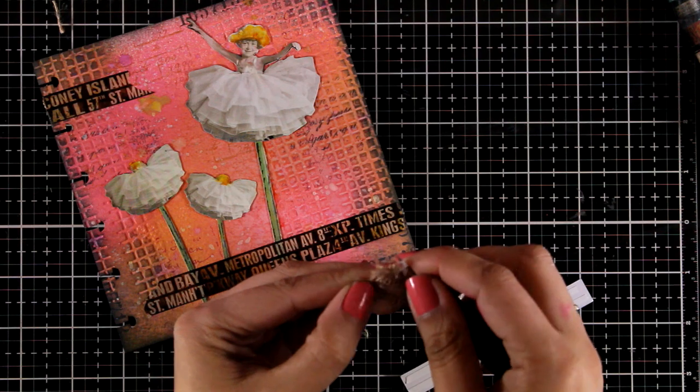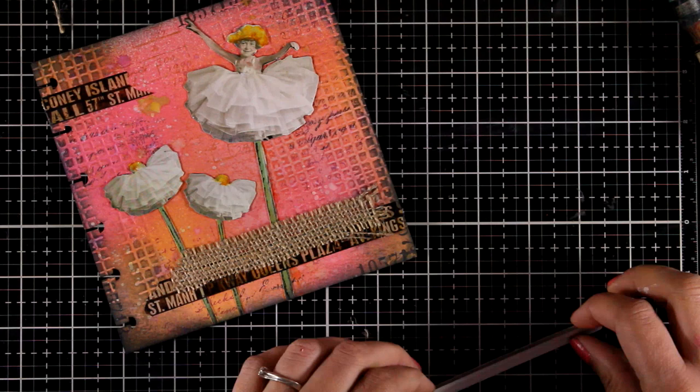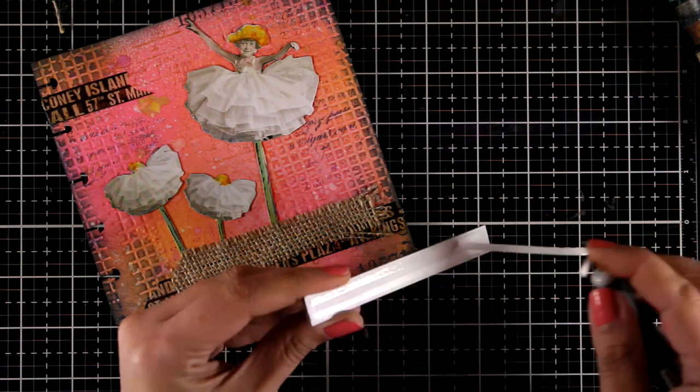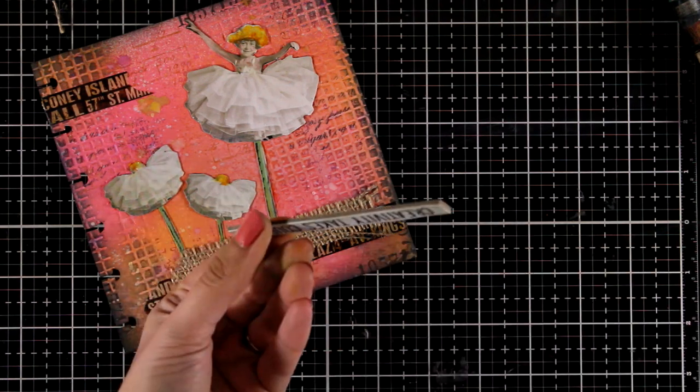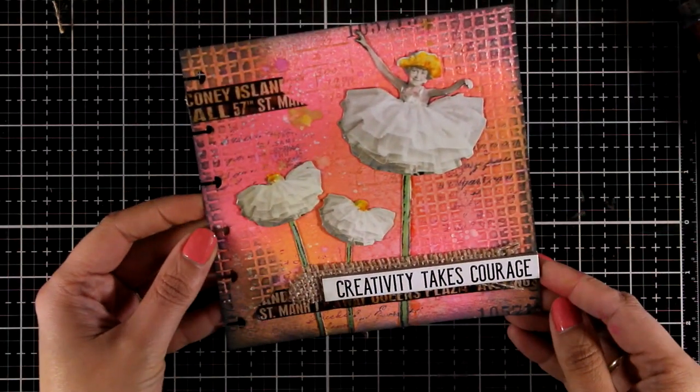I'm going to add some washi tape as well as a little bit of burlap here, just to add some extra texture on my page. I am using double-sided tape here to secure everything down and I keep switching between adhesives just because I have everything on my table.